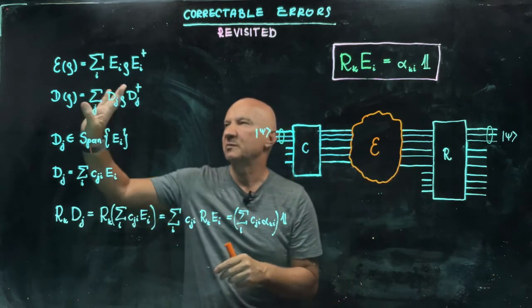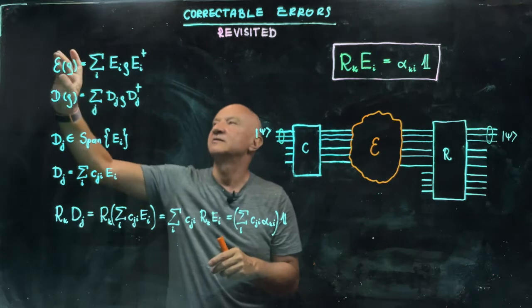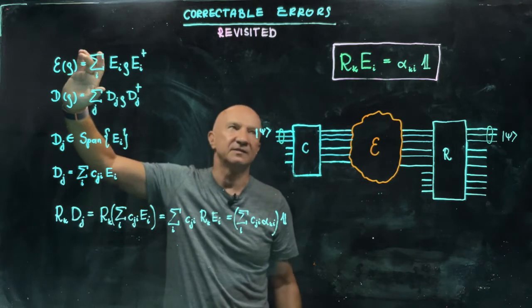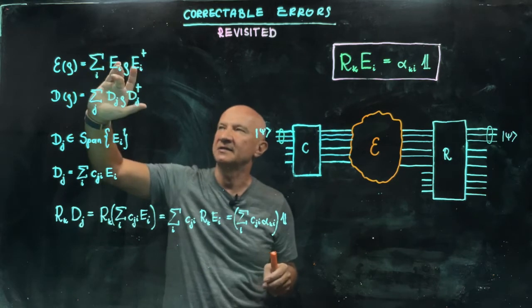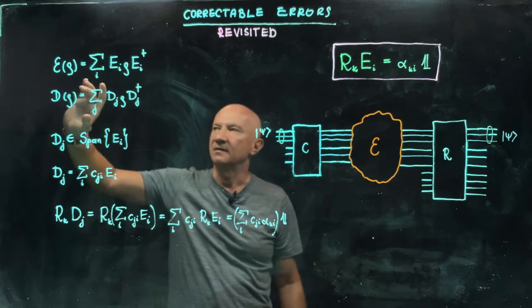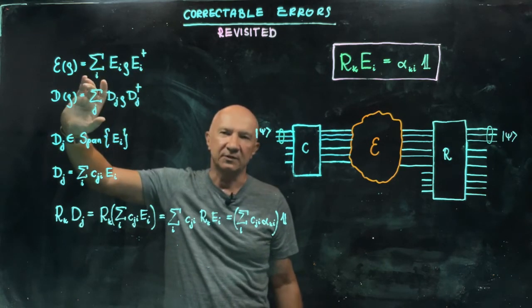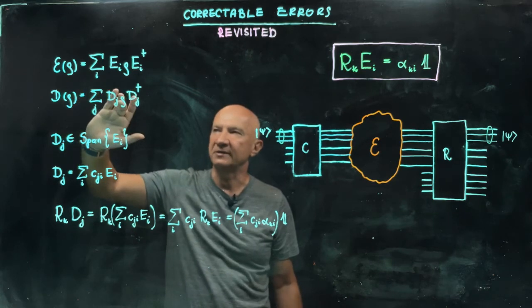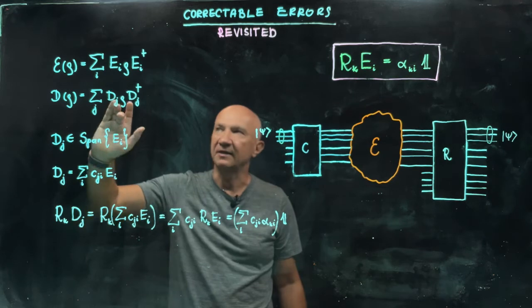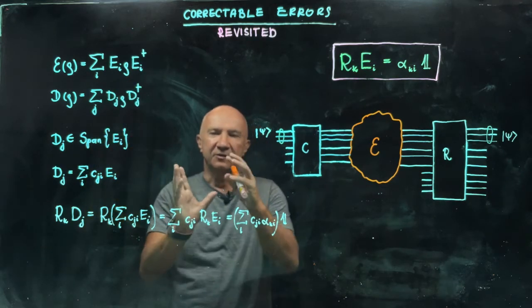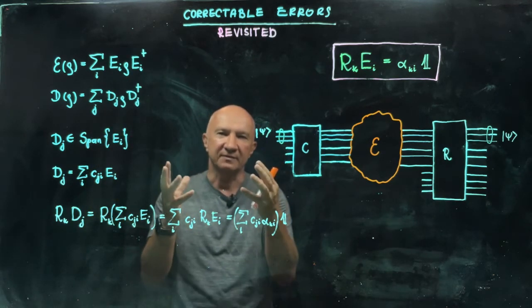So just to be more specific, consider, so you know that this one is invertible, right? So you design the circuit for this particular map, it has errors EI. And then consider another completely positive map with Kraus operators DJ, such that DJ is in the span of EI. Remember that those operators form a linear vector space. They can be added, right?